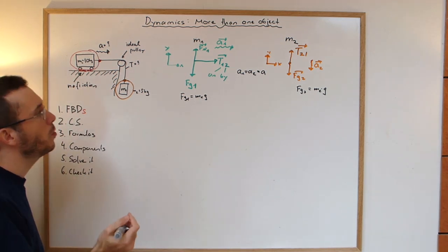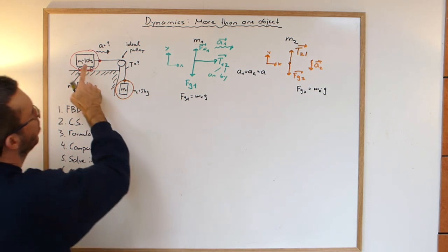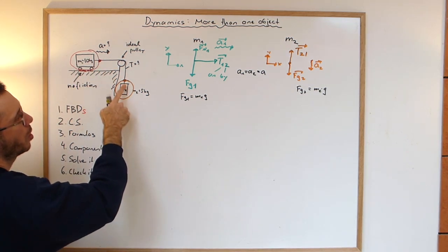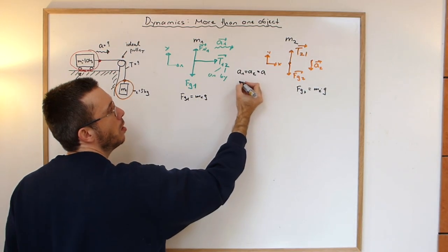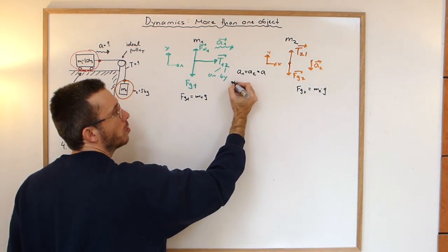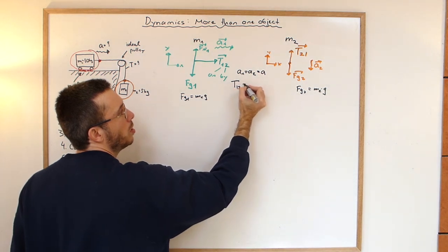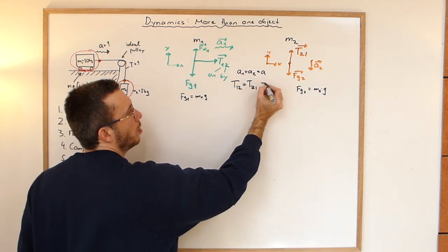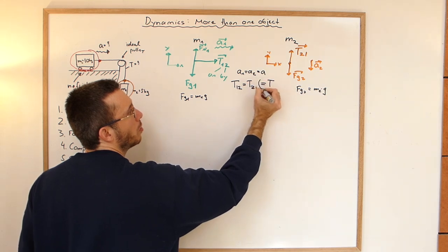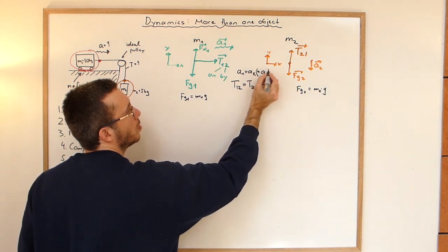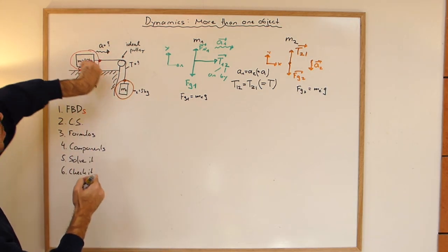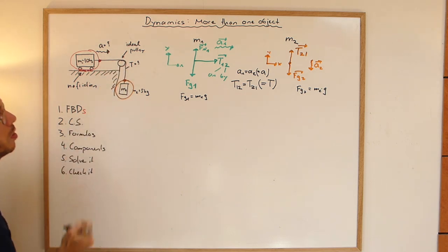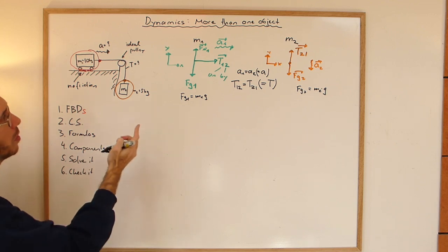Also, we have Newton's third law. If object 1 is pulling on object 2, then object 2 is pulling on object 1 with the same magnitude in an opposite direction. So T12 is equal to T21. Let's just call this one T from now on. And we can check opposite directions. Yes, this one is pulling this way on the cable. The other one is pulling that way on the cable.